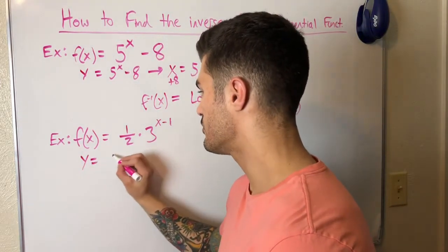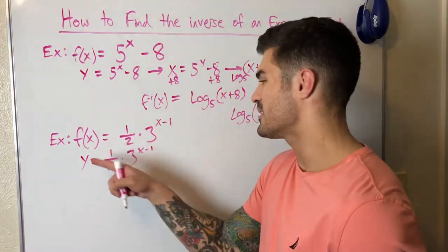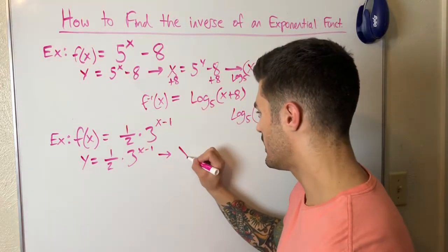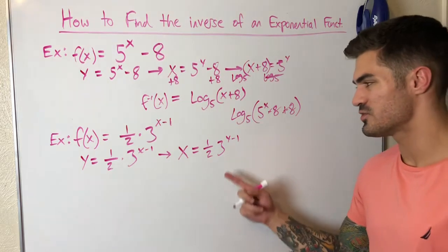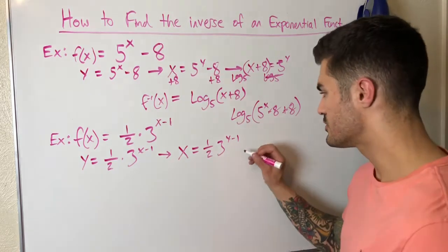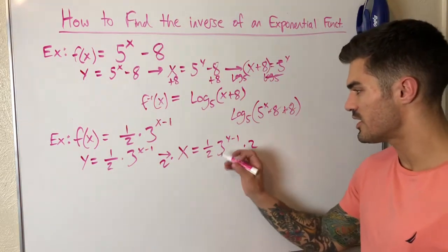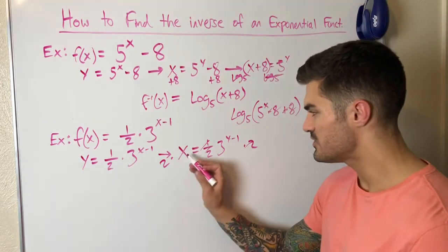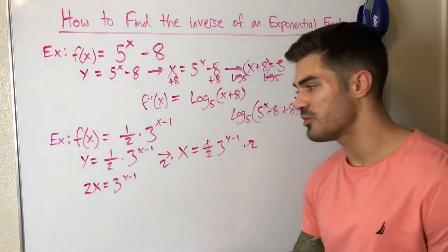Moving to the next example: f(x) = one-half times 3 to the x minus 1. I replace f(x) with y, then switch x and y to get x equals one-half times 3 to the y minus 1. I multiply both sides by 2 to eliminate the one-half, leaving 2x equals 3 to the y minus 1.